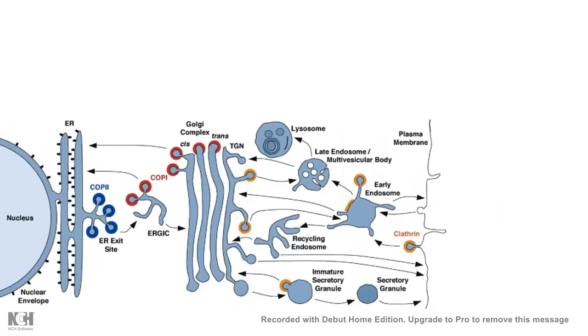Now, we look at where does clathrin coated endocytosis happen and where other places does clathrin coating is required. So, clathrin coated endocytosis happens from wherever the proteins are trying to get endocytosed from outside of the cell, those vesicles are budding off with a clathrin coat on it and they mostly fuse with early endosome.